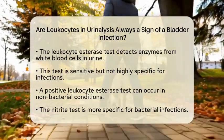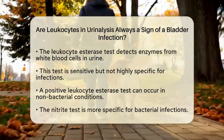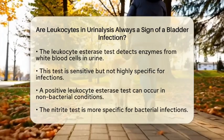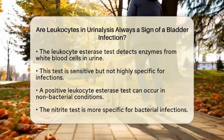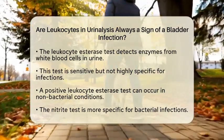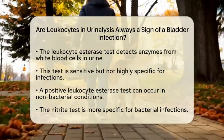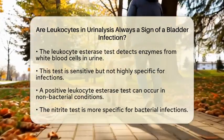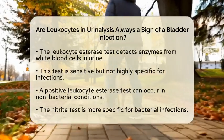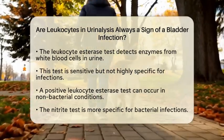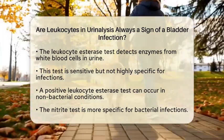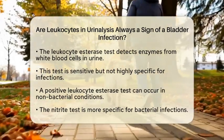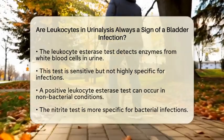On the other hand, the nitrite test is more specific for bacterial infections. Many bacteria that cause urinary tract infections convert nitrates to nitrites. So, if this test is positive, it strongly suggests a bacterial bladder infection.